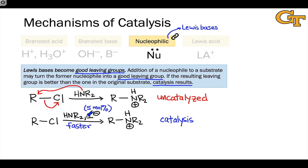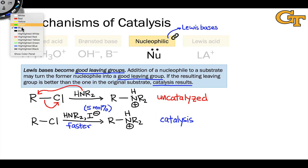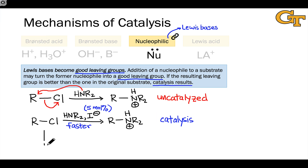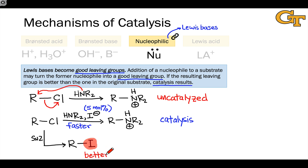Iodide absolutely cannot deprotonate the nitrogen. Instead, iodide is acting as a nucleophile itself. In the first step of the catalyzed mechanism, iodide engages with the alkyl chloride in an SN2 step, and this creates an alkyl iodide intermediate. What this has done is change the chloride leaving group into an iodide leaving group. Iodide is a better leaving group than chloride because of its larger size and its polarizability — its ability to disperse negative charge within the larger I atom as opposed to Cl.